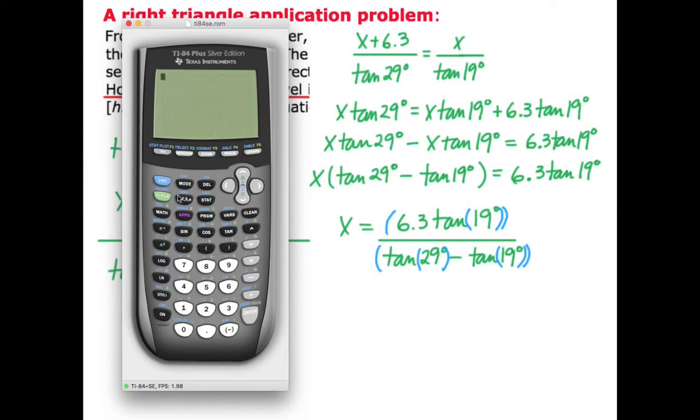I'm going to go to my calculating screen. Now this is an older model calculator. I don't have the fraction template. So I'm going to have to enter it in with all these extra parentheses. So we've got 6.3 tangent 19 divided by tan 29 minus tan 19.